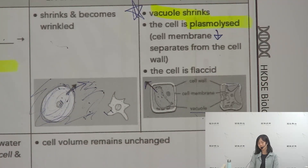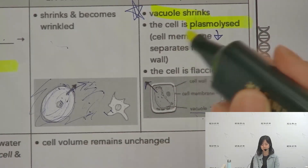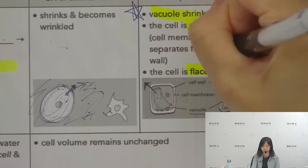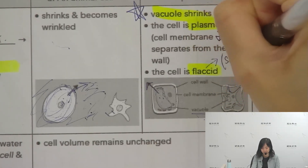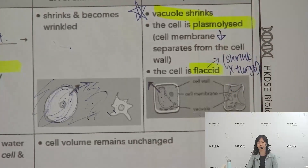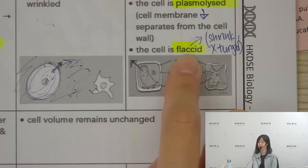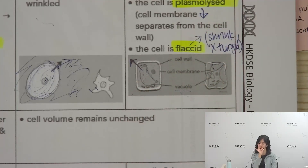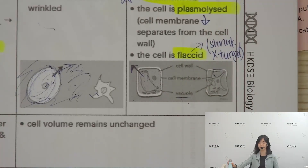There is also the term 'flaccid'. Many students confuse plasmolyzed and flaccid. 'Flaccid' means the cell has lost water and is no longer turgid — turgid means swollen. So flaccid means the cell has softened and lost water. Remember: plasmolyzed and flaccid are very different states.